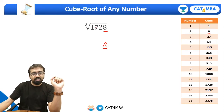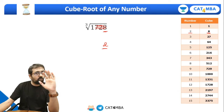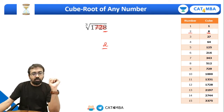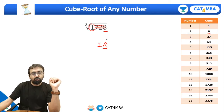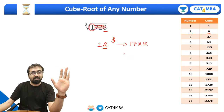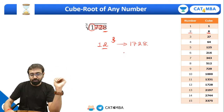What is the cube root of one? It's one itself. So that means 1728 is the cube of 12. Isn't that simple? Let's take a few more examples.